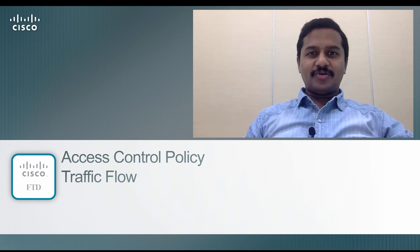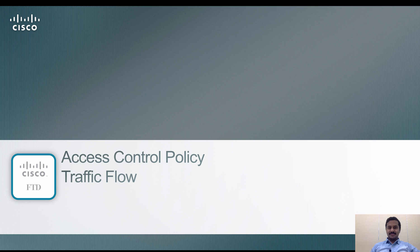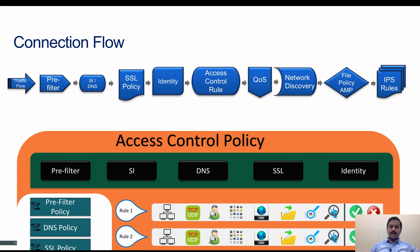Hello, welcome back to Firepower Threat Defense training video series. I am Nanda. This video is part two of the access control video series. In the first video, we have seen what components are available on the access control policy and how the policy interaction works between the pre-filter, security intelligence, and its own policy framework. In this video, we are going to see how connections are applied on each of these components within the access control policy.